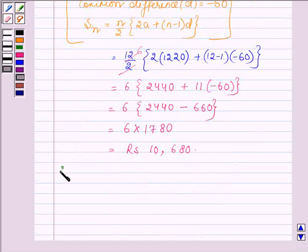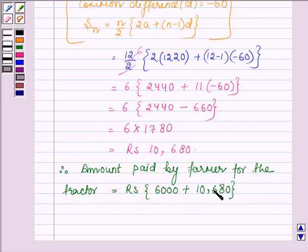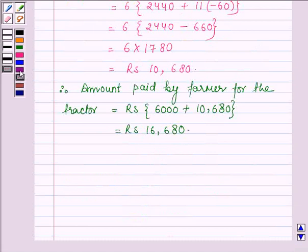Therefore, the amount paid by the farmer for the tractor is equal to Rs. 6,000 which he paid cash, plus Rs. 10,680 which he paid in installments. So the total cost of the tractor which the farmer paid is Rs. 16,680.